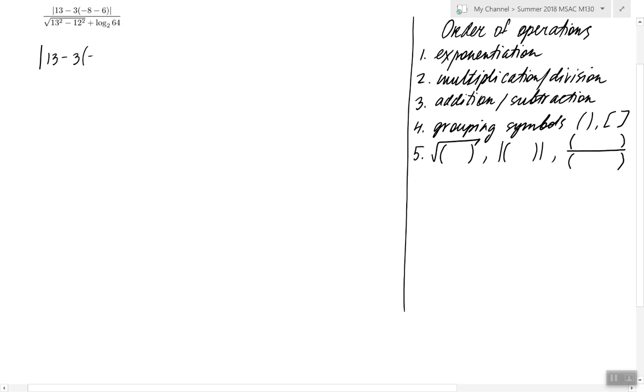Let's look at the absolute value, and there we see another parenthesis. We have to do -8 - 6 first. What's -8 - 6? It's -14. So here we write the result of that operation and everything else remains intact.